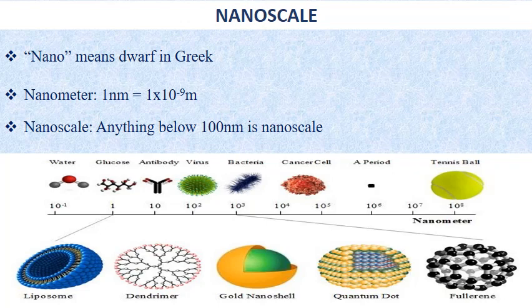The smallest cellular life forms, the bacteria of the genus Mycoplasma, are around 200 nanometers in length. As visible from this image, we can see items as large as a tennis ball, which is in the range of 10⁸ nanometers, and a water molecule at 10⁻¹ nanometers. Below, you can see various types of nanomaterials we will discuss later, like liposomes and dendrimers.